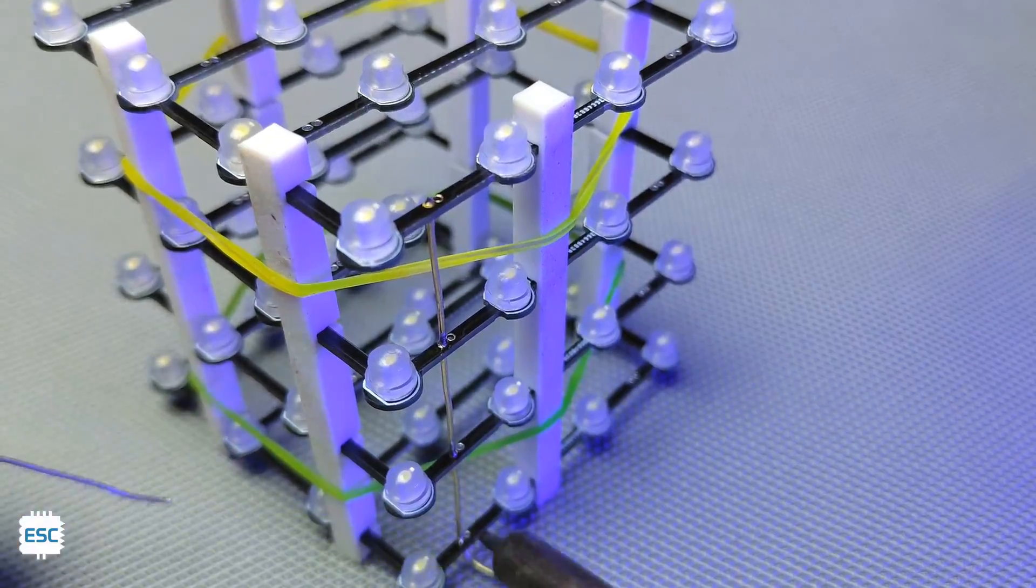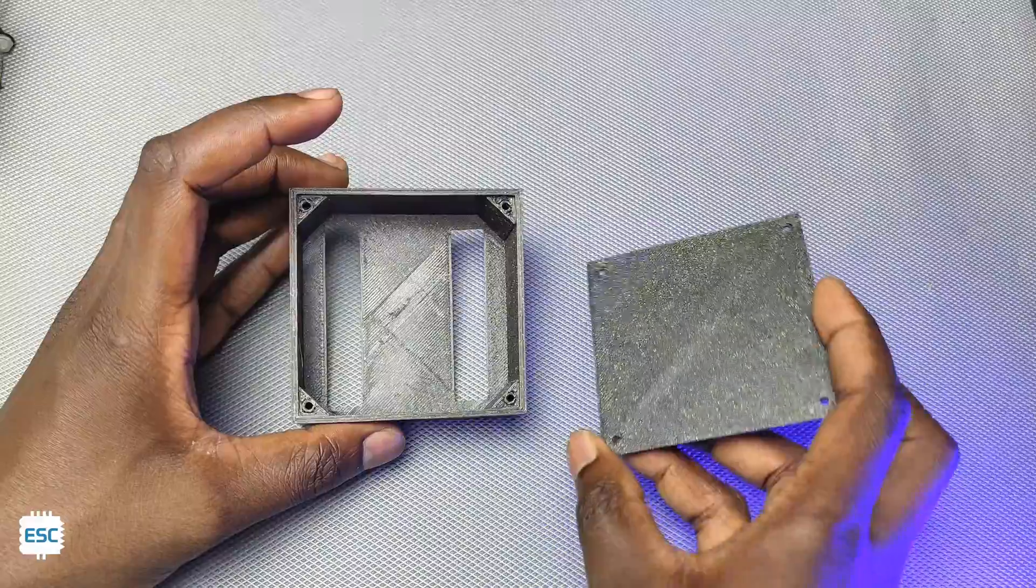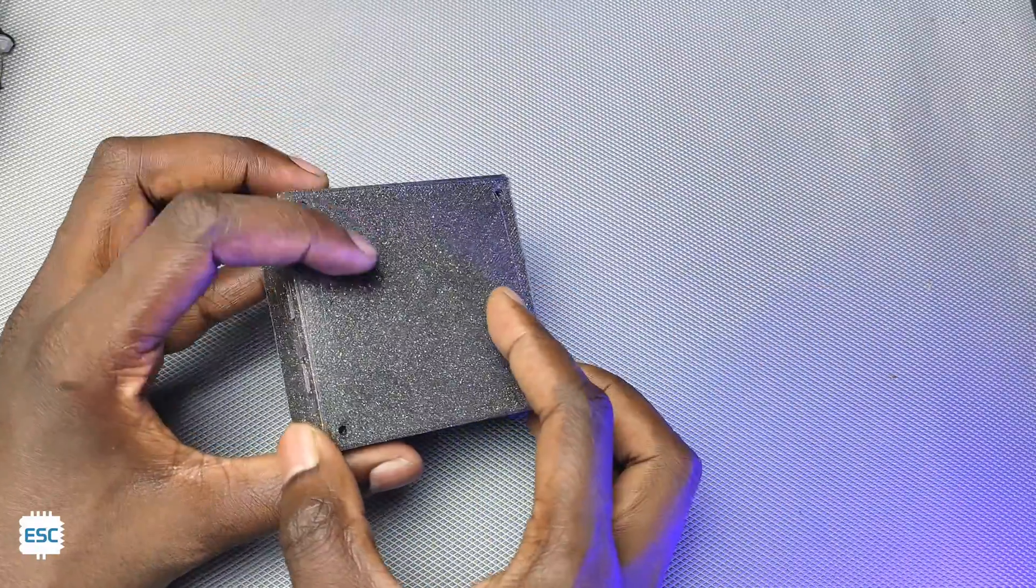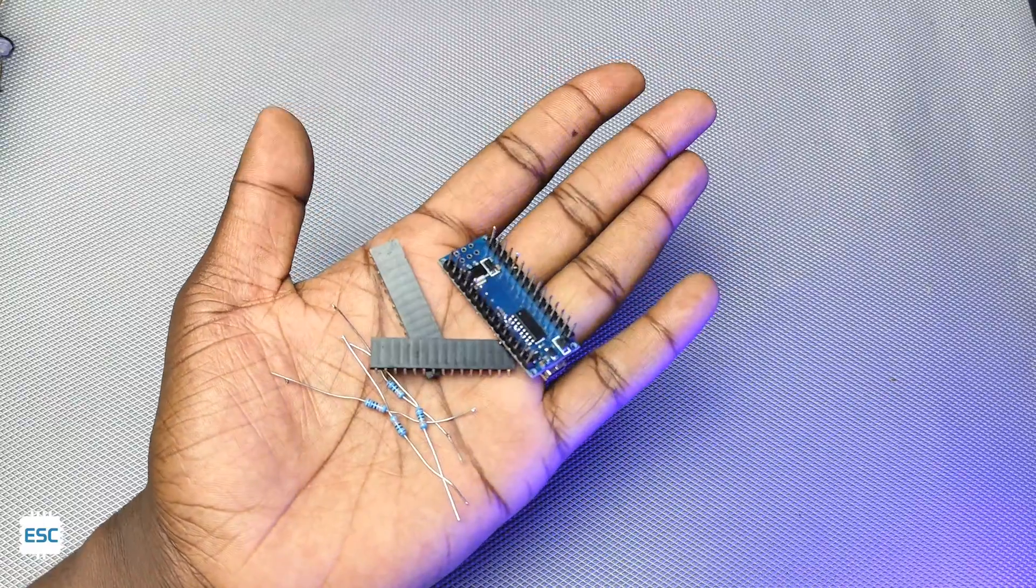After doing all the soldering, the LED cube looks like this. Now I used the 3D printed case as base and soldered the circuit on a common PCB. You can download the circuit diagram from my website, link is given in the video description.